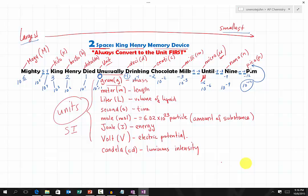In the last lesson, we learned a memory device called Two Spaces King Henry Memory Device to memorize all the exponential values of different prefixes that are used with the SI unit.